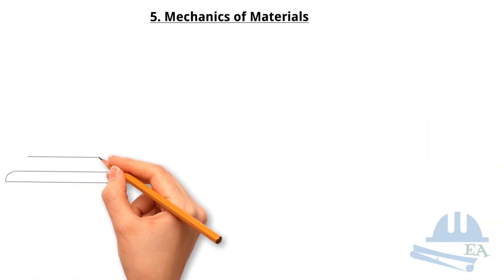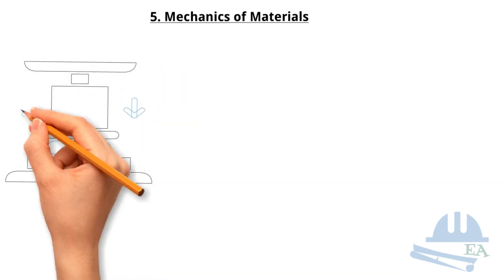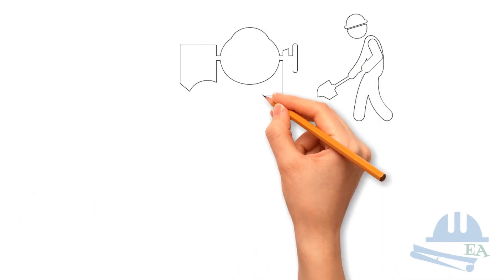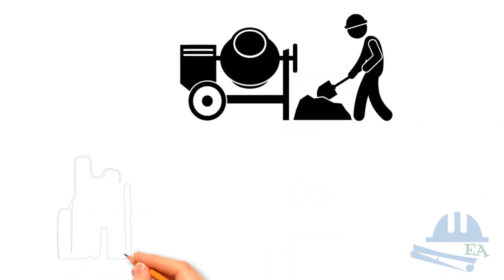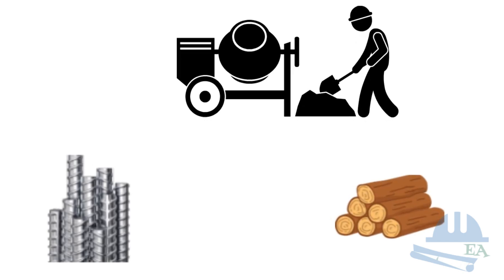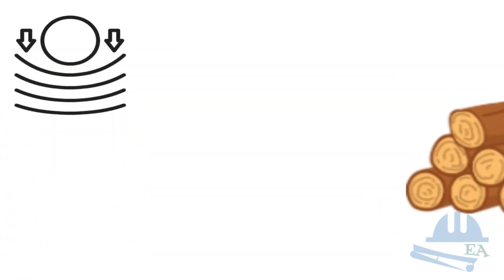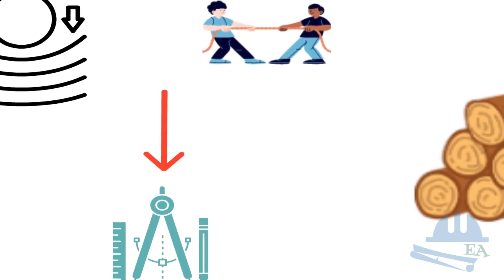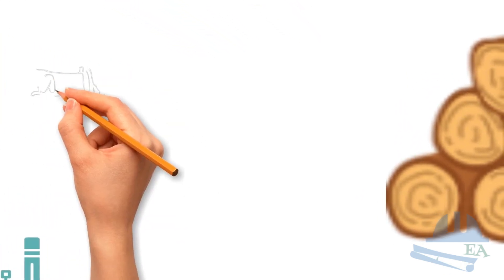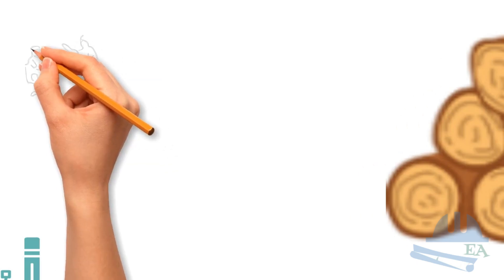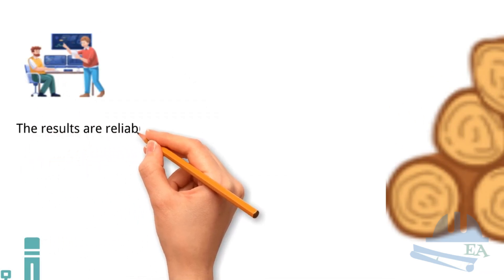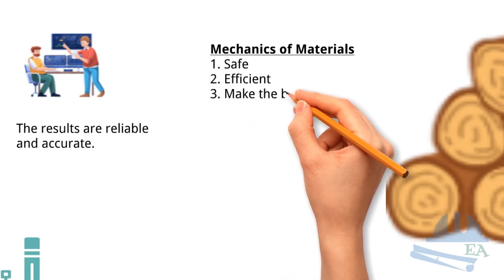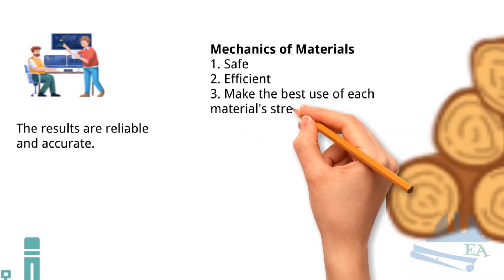Mechanics of Materials. Mechanics of Materials is the study of how different materials respond to various loads and forces. This knowledge is crucial in structural design because it helps us understand the behavior of concrete, steel, and timber under different conditions. By knowing how these materials react to stresses and strains, we can accurately utilize their properties in our designs. This allows us to input precise material data into structural analysis software like ETAPS or SAF2000, ensuring that the results are reliable and accurate. Understanding the mechanics of materials enables us to create designs that are safe, efficient, and make the best use of each material's strength.